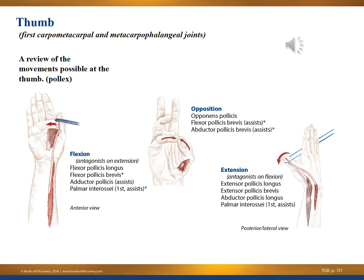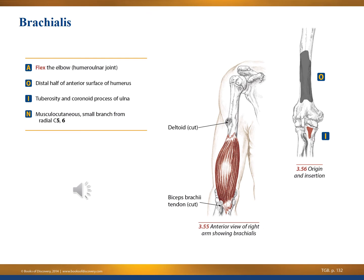One of the only places we have the movement of opposition in our body is at the thumb. We review flexion (bringing the thumb in toward the body), extension (moving the thumb out), and opposition. The thumb is sometimes known as the pollux. Several muscles have 'pollicis' in the name — such as flexor pollicis longus and flexor pollicis brevis — because the anatomical name for the thumb is the pollux.